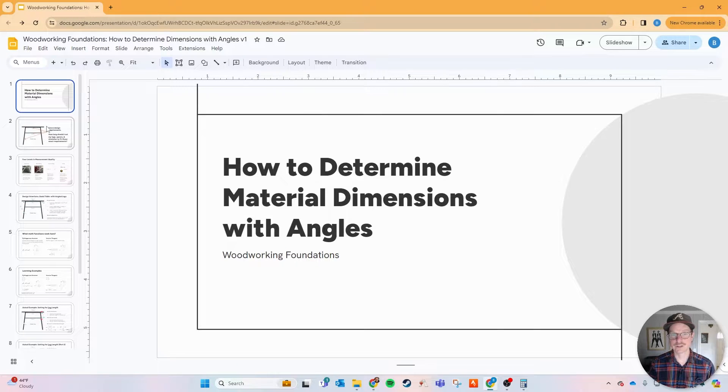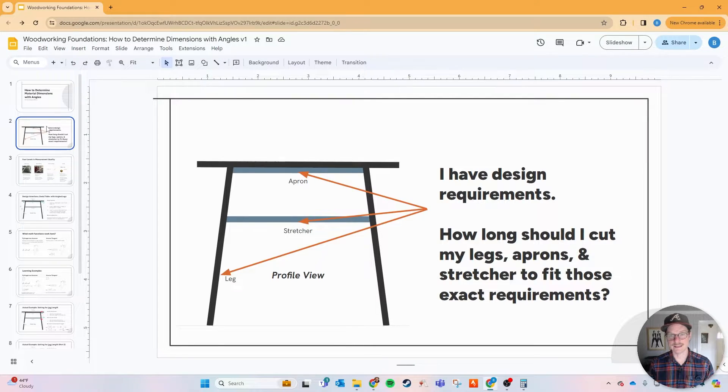Today we're going to do something a little bit different. We're going to go to the desktop instead of the workshop and I'm going to show you how to determine material dimensions when it comes to angles in your furniture. What I mean by that is I have design intent or requirements for this desk that I built. By the way, this is one I built last week in the video above. I wanted to know how long I should cut my legs, stretchers, and aprons to fit those exact requirements.